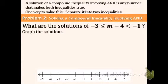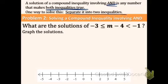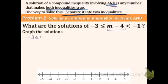A solution of a compound inequality involving AND is any number that makes both inequalities true — it has to satisfy both inequalities. We're going to focus first on separating the two inequalities. See how M minus four is in the middle of both? We're going to separate it: negative three is less than or equal to M minus four, AND M minus four is less than negative one.